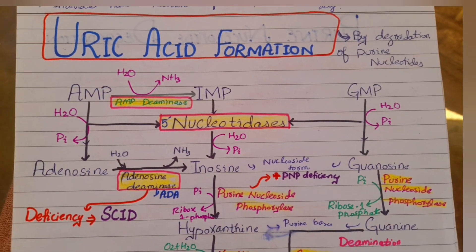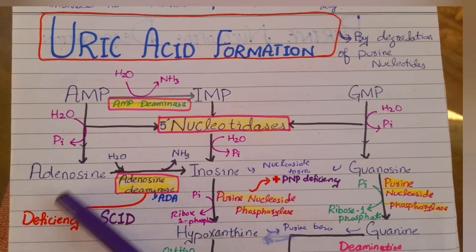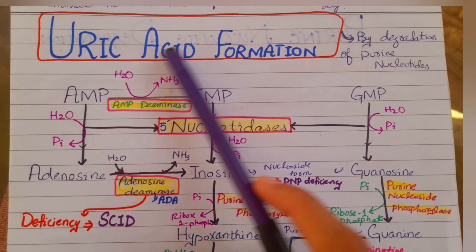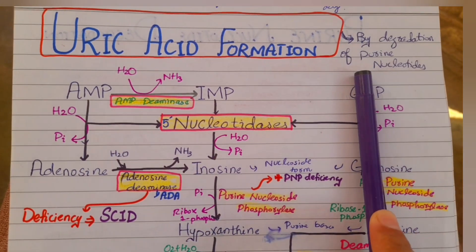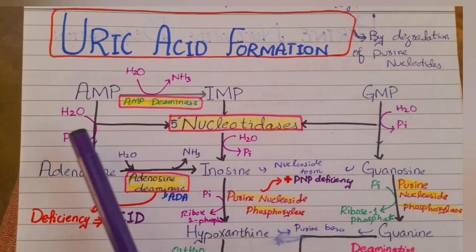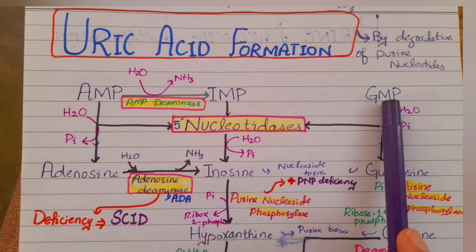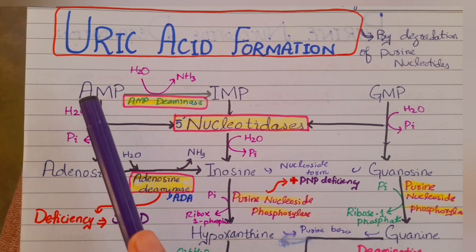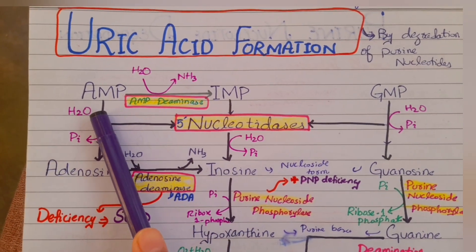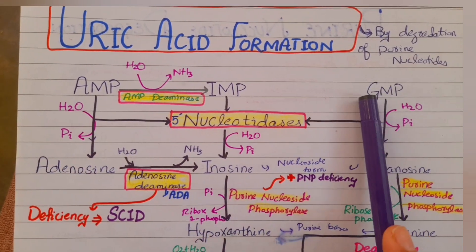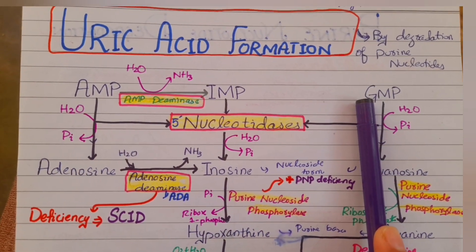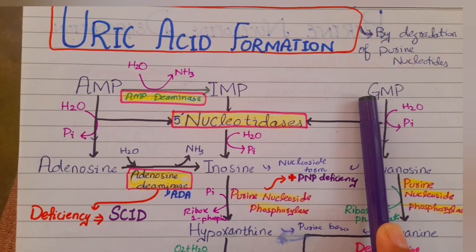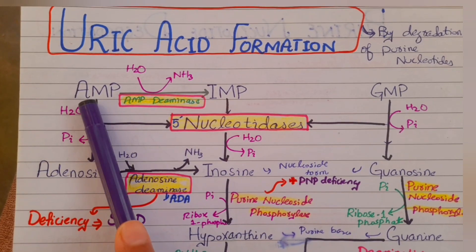In this video we will study about the formation of uric acid by the degradation of purine nucleotides. We know that AMP and GMP — adenosine monophosphate and guanosine monophosphate — are both purine nucleotides.